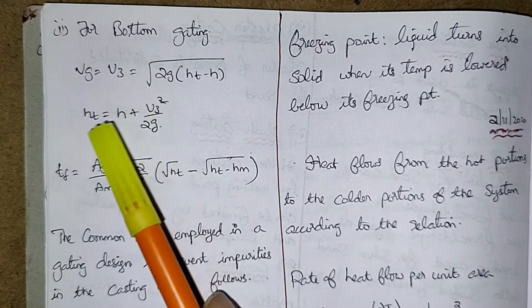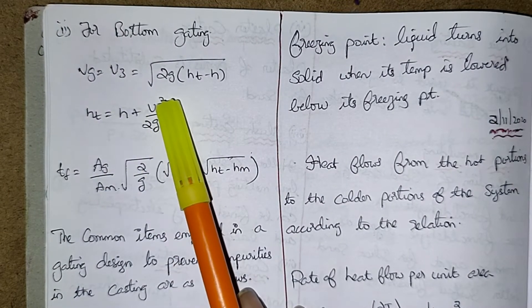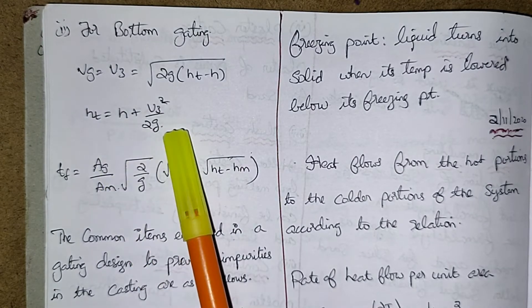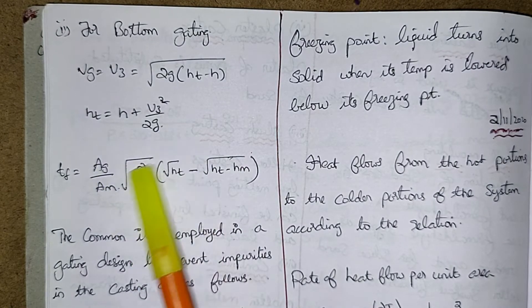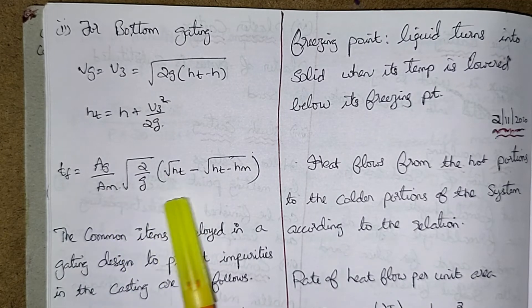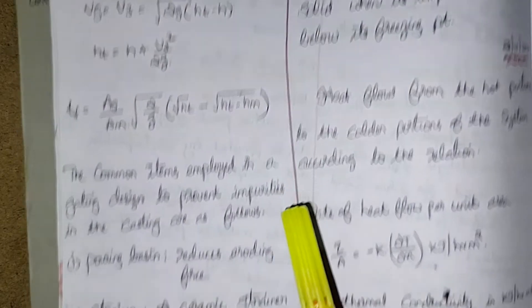Now for bottom gating: Vg equal to V3 is equal to root 2g into (ht minus h). Ht is equal to H plus Vg squared by 2g. So Tf equal to Ag by Am root 2 by g into root ht minus root ht minus hm.